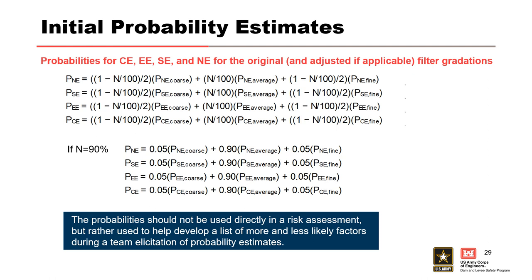Fell et al. 2008 recommends making an initial estimate of the probabilities of no erosion, some erosion, excessive erosion, and continuing erosion by calculating the sum product of the percentage of the base soil gradations and the estimated percentage of the four erosion categories for the coarse, average, and fine base soil gradations. Capital N corresponds to the representative base soil gradation as a percentage of all gradation tests, and (1 minus N over 100) divided by 2 corresponds to the percentage finer or coarser of the base soil. For example, if the representative base soil gradation N is 90%, there is 5% finer and 5% coarser than the representative grading.